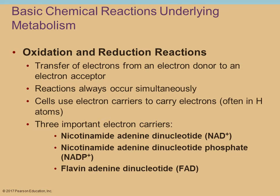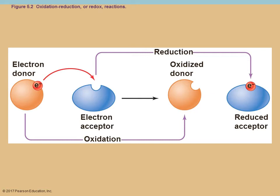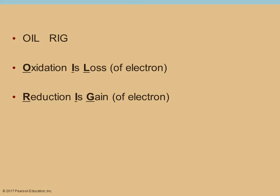Now you know why we abbreviate things. This is showing a standard oxidation-reduction reaction, abbreviated as a redox reaction. The orange circle gives up an electron and is said to be oxidized; the blue oval receives the electron and is said to be reduced. A mnemonic to keep this straight is OIL RIG: oxidation is loss, reduction is gain — referring to electrons.